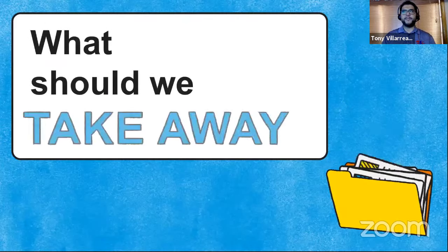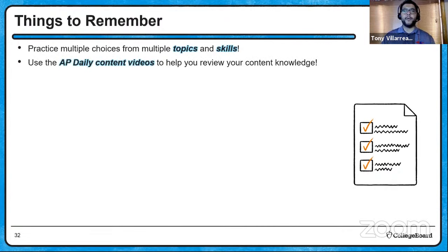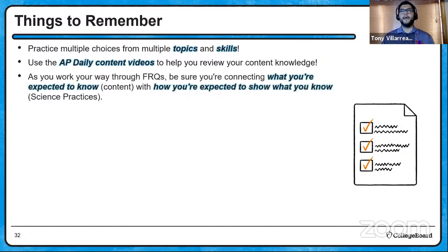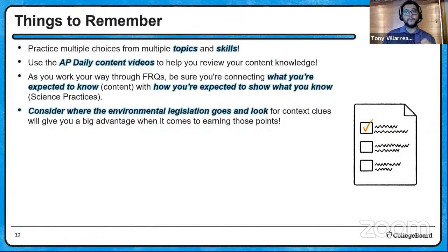Key takeaways from this final video: practice topics and skills together. Use AP Daily content videos and these review videos, which are also housed on AP Classroom for teachers to assign. The first four videos are already up; the next four from this week will follow soon. As you work through an FRQ, look at what you're expected to know and use the science practices to guide you. Look for environmental legislation context clues — they can appear in both free response and multiple choice and give you an advantage in earning points.